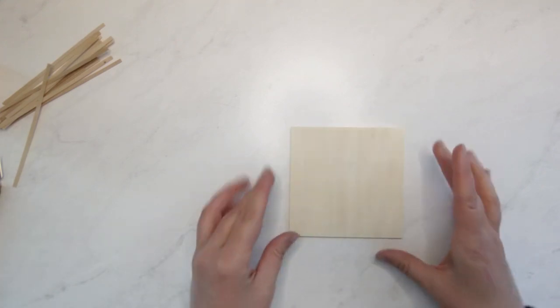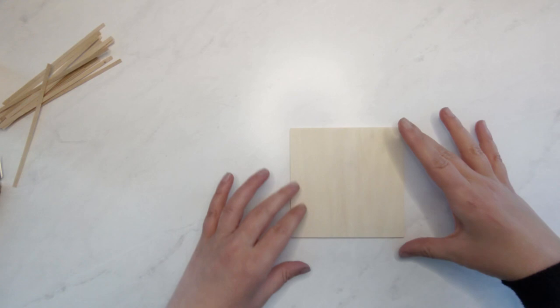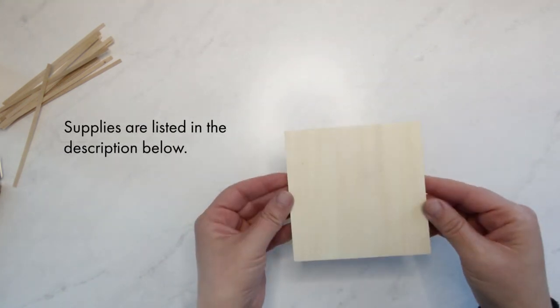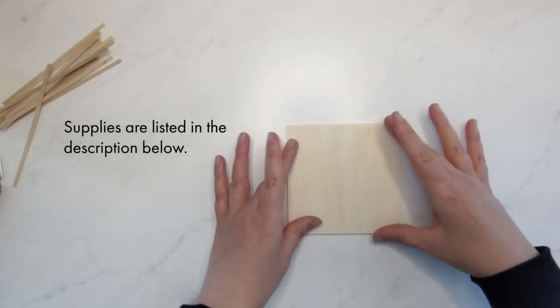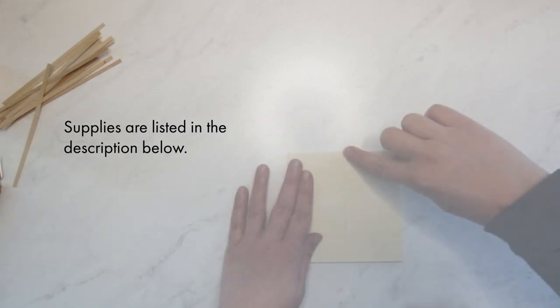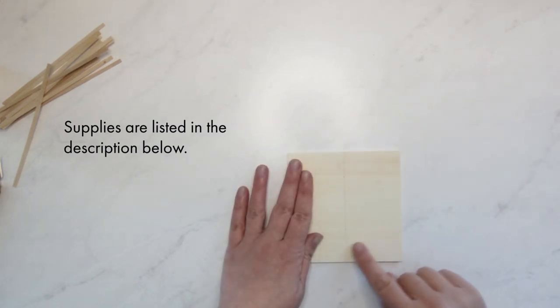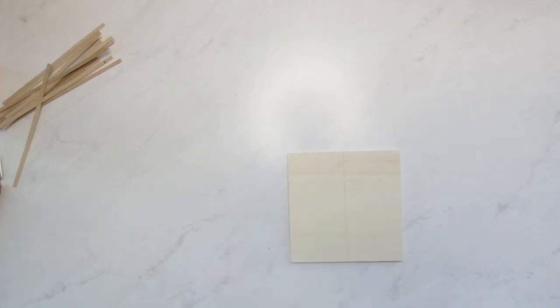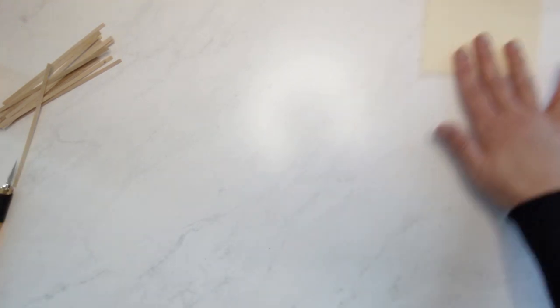So today we're going to be creating a wood coaster - beautiful, stunning wood coaster - looks like a million bucks, costs about 30 cents to make because we're going to use popsicle sticks and coffee stirrers. To start, we're going to take our wooden plank, it's 4.5 by 4.5 inches, and mark the center with a pencil where we're going to add the chevron detail of the popsicle sticks.